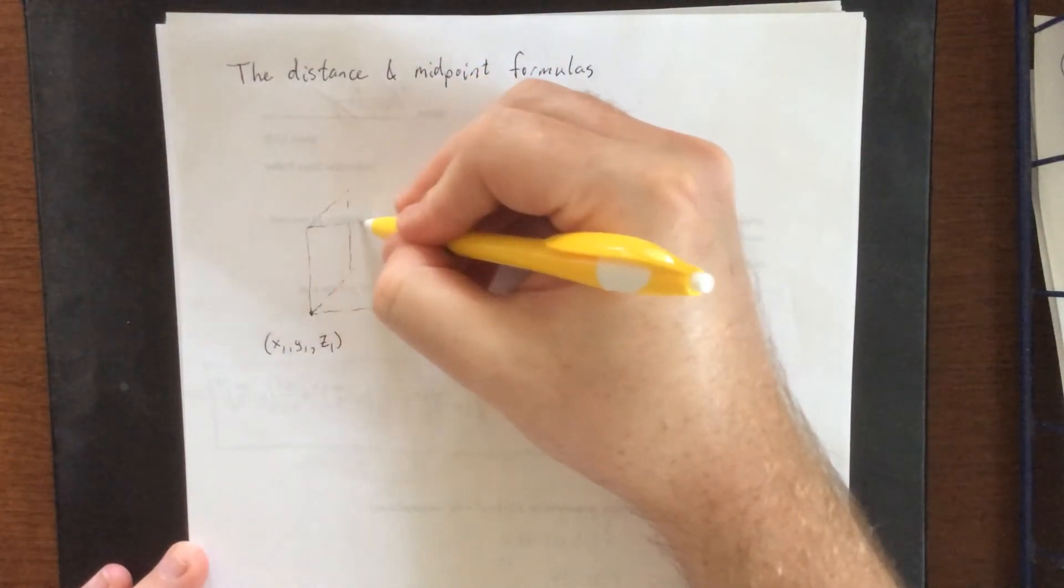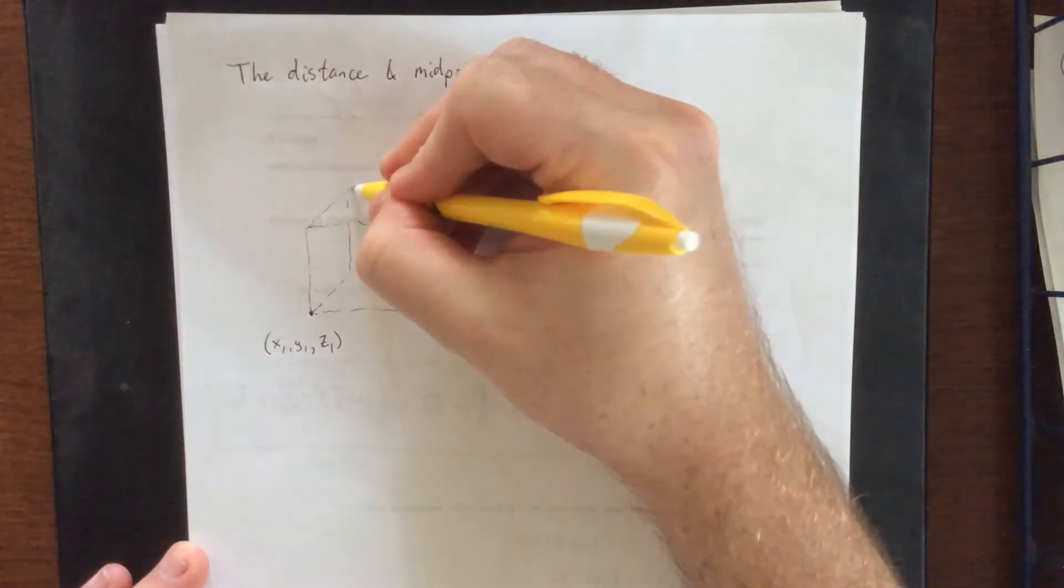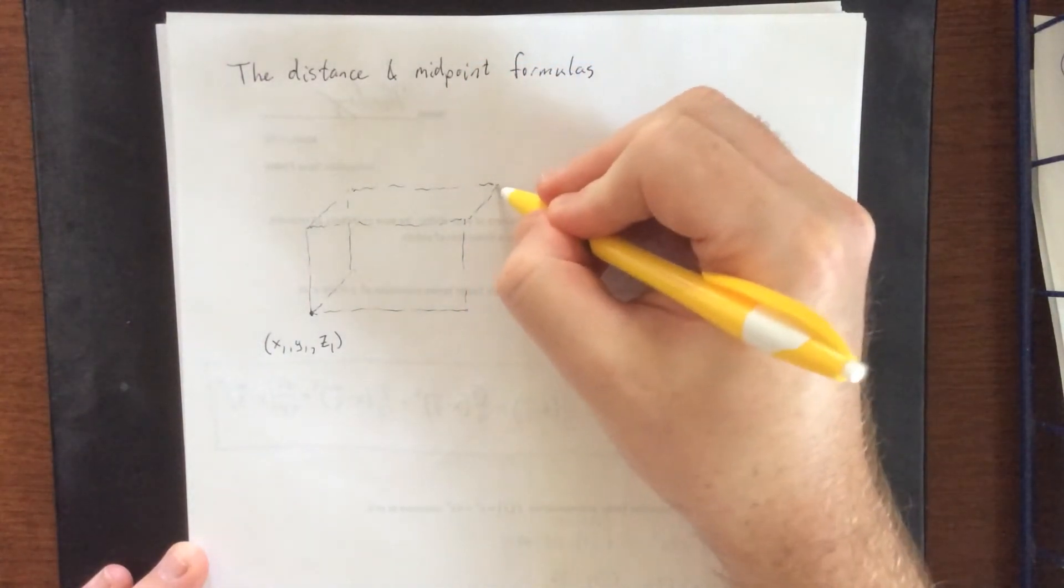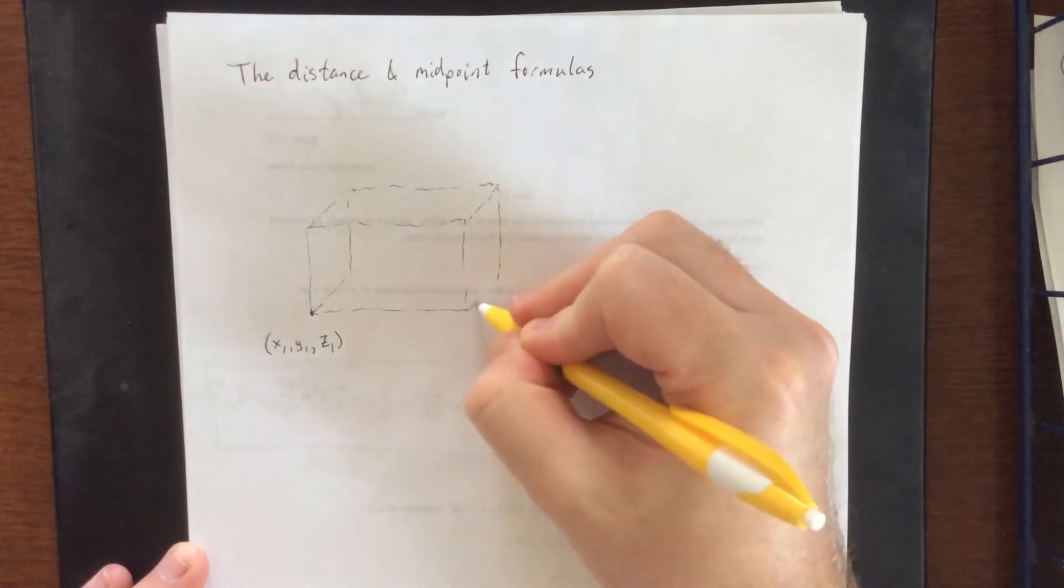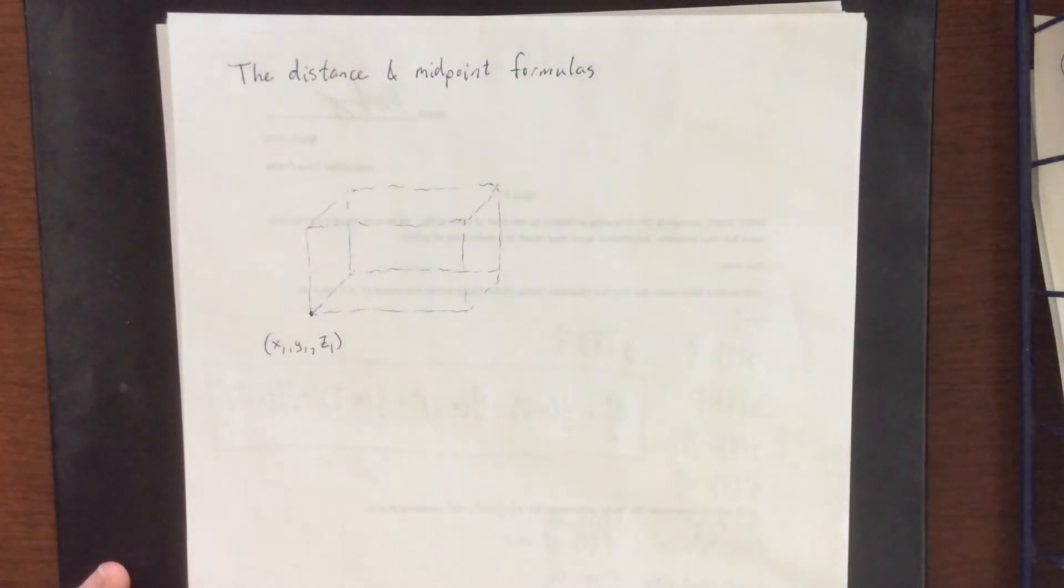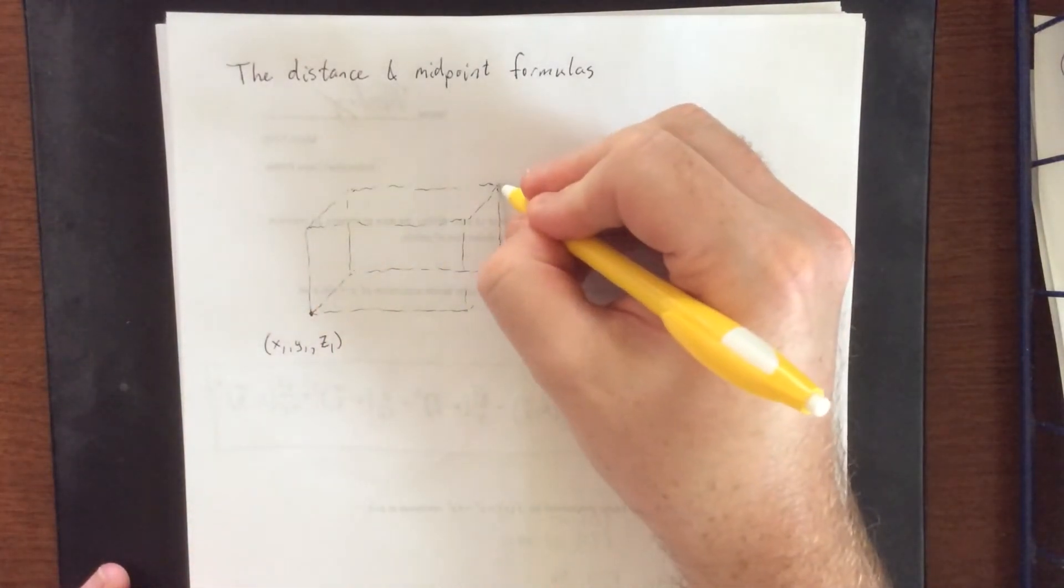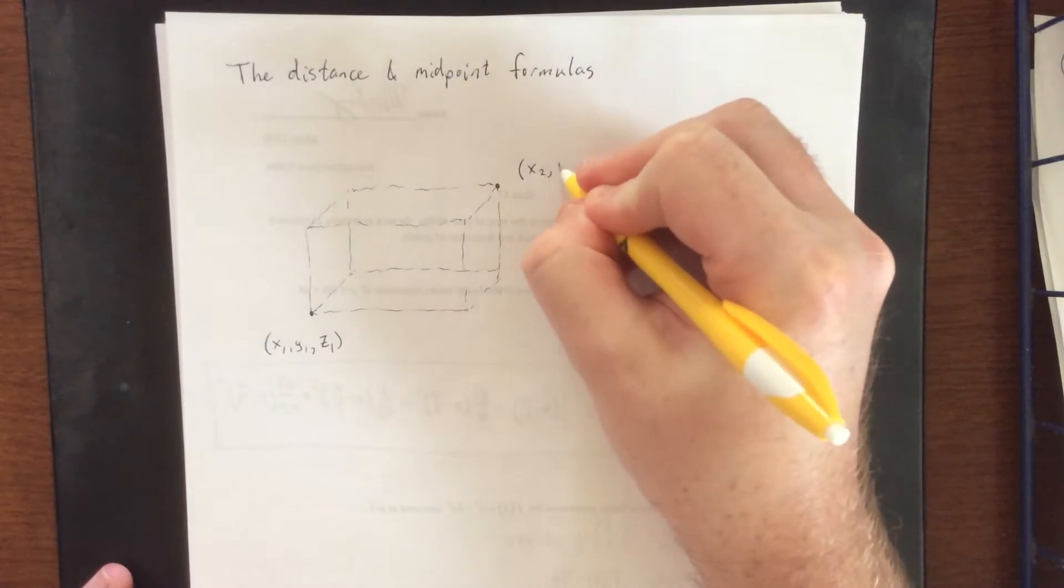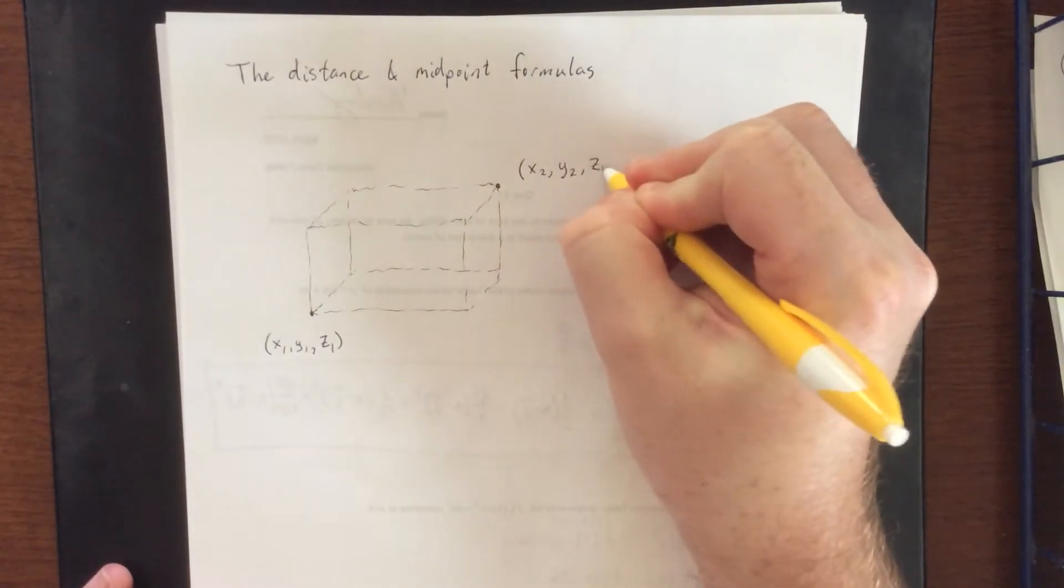Sketching out a box similar to what we saw in the plotting a point in three dimensions example, making sure that all of our sides are mutually parallel or perpendicular to each other. These will connect out here at (x₂, y₂, z₂).